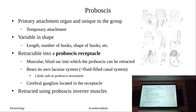The proboscis is the primary attachment organ, unique to this group — that's why they're called acanthocephalins. It's temporary attachment: the worm can attach to the intestinal epithelium and then detach. The proboscis is variable in shape — we're talking about length, the number of hooks, the shape of hooks, the pattern and arrangement. This variation has actually been used to identify the various species, so the utility in identification is very high.